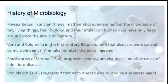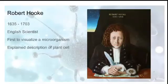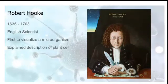Many people made tremendous changes in microbiology. Robert Hooke, who lived from 1635 to 1703, was an English scientist and the first person to visualize a microorganism with a microscope. He also explained the description of plant cells.